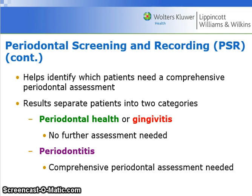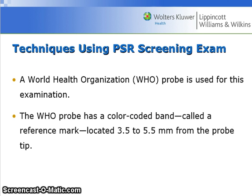PSR results separate patients into two categories: those with periodontal health or gingivitis, where no further assessment is needed, and those with periodontitis, where a comprehensive periodontal assessment is required. A World Health Organization probe is used for this examination. The WHO probe has a color-coded band called a reference mark, located 3.5 to 5.5 millimeters from the probe tip.